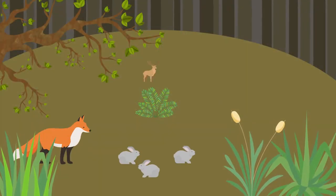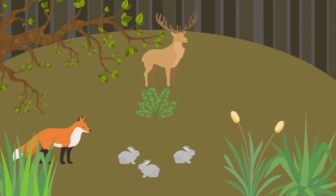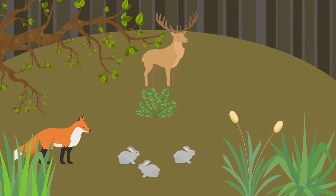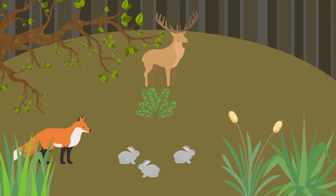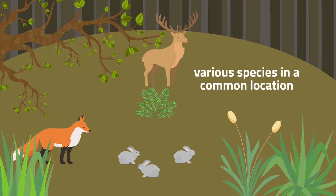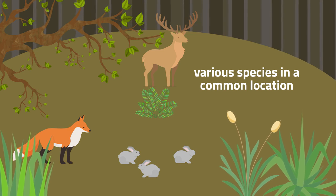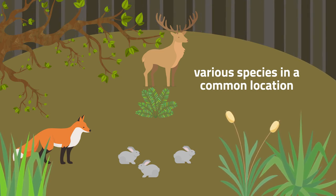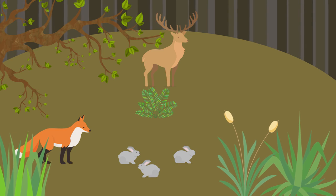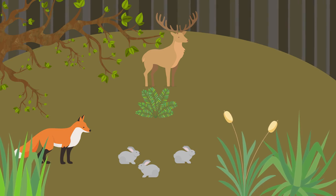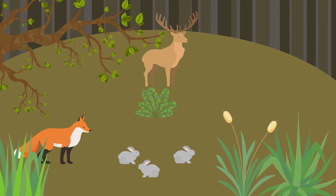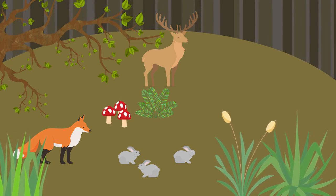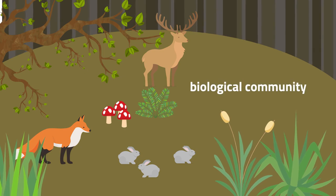Interactions are the effects organisms in a community have on one another. Remember, a community is made up of various species in a common location. For example, a forest of trees and undergrowth plants, inhabited by animals and rooted in soil containing bacteria and fungi, constitutes a biological community.